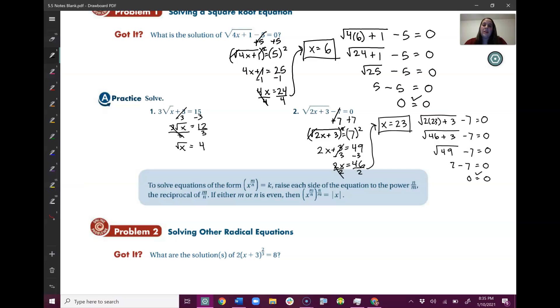And now the root is by itself. That's what I wanted. So now that the root is by itself, I can square it. So those cancel, and I get x equals 4 squared, which is 16. And then I have to check my answer. So plug it into the original. Make sure it works.